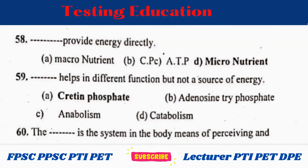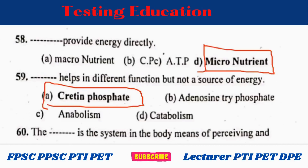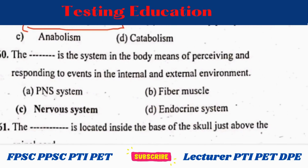Micronutrients provide energy directly. Creatine phosphate helps in different functions but is not a source of energy. The nervous system is the system in the body for perceiving and responding to events in the internal and external environment.